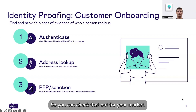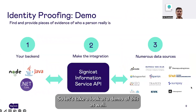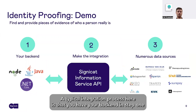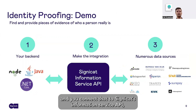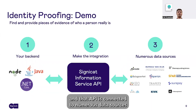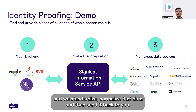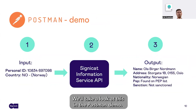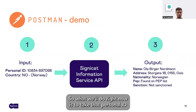Let's take a look at a demo of this. A typical integration process is that you have your backend in step one, and you connect that to Signicat's Information Service API. That API is connected to numerous data sources, and we standardize and normalize that data and then send it back to you.